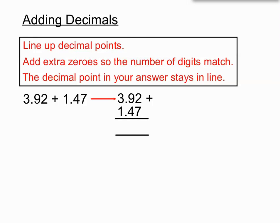And then we just add the digits pretty normally here. 2 plus 7 is 9. The next column, 9 plus 4 is 13. We'll write down the 3 and we'll carry the 1 over.